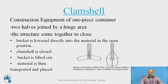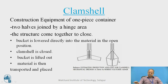In the working of the clamshell, the bucket is lowered directly into the material in the open position. The clamshell is closed, the bucket is lifted out and then the material is transported and placed at a desired location. In the sketch you can see both positions: the first one is the open position of the clamshell and this is the position wherein it gets closed. Whatever material is collected within these two arms will be transported and dumped at the required location.